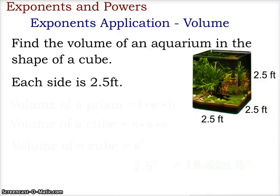Our first example, we are to find the volume of an aquarium in the shape of a cube. Now, if it's a cube, that means all three sides, or all three lengths, are equal.